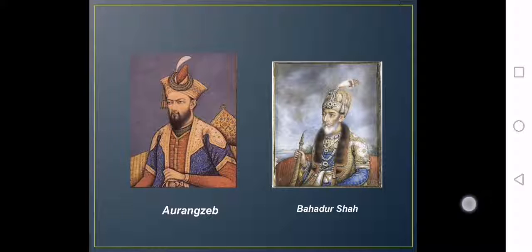Aurangzeb had 3 surviving sons at the time of his death, and after his death, his eldest son Bahadur Shah took the throne. Although he was brave, he was old too — you can see this in the picture on the right side. He was unable to take care of the empire, which was a clear sign that the decline of the Mughals had begun.